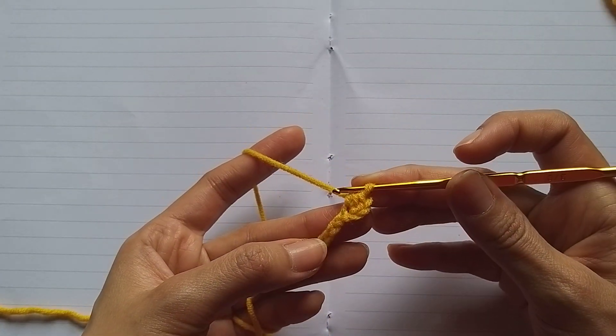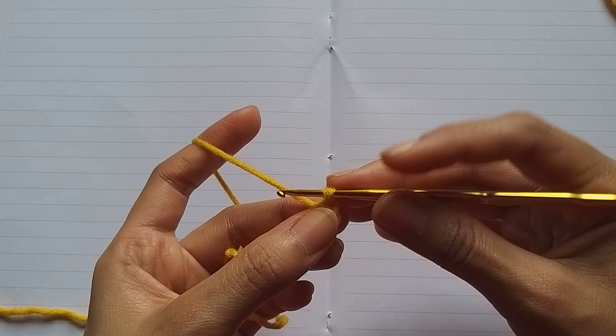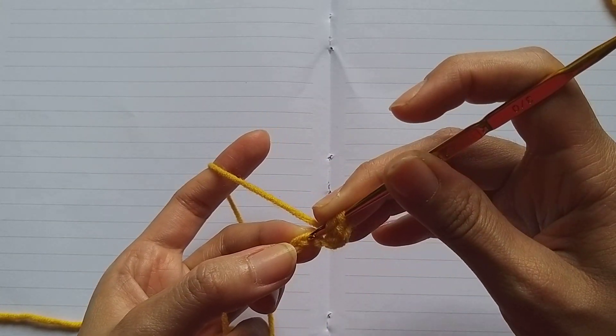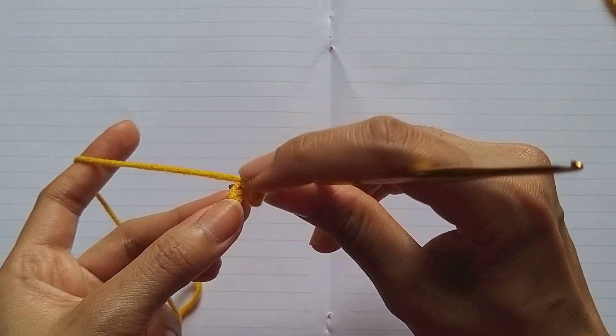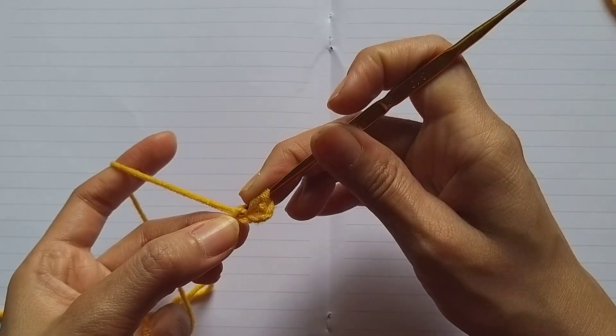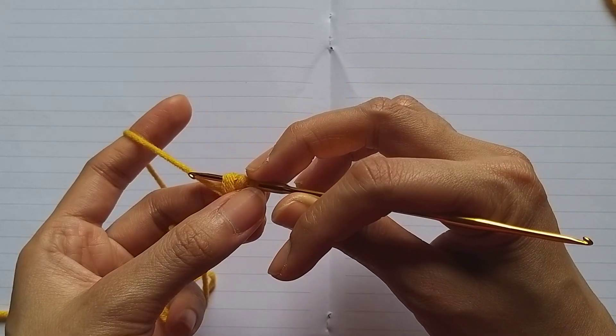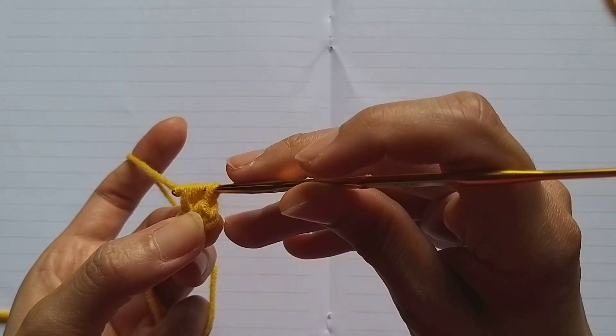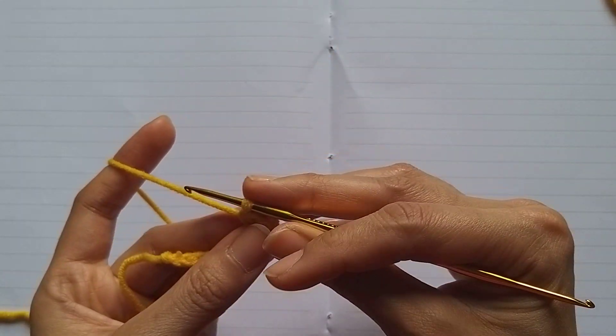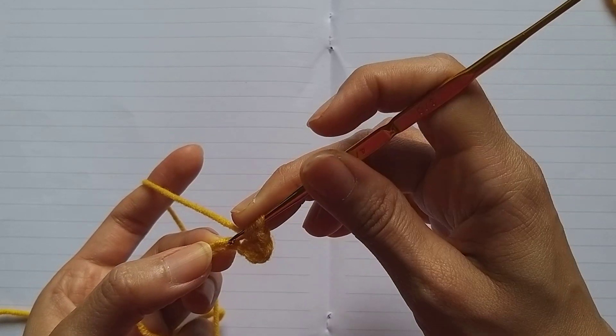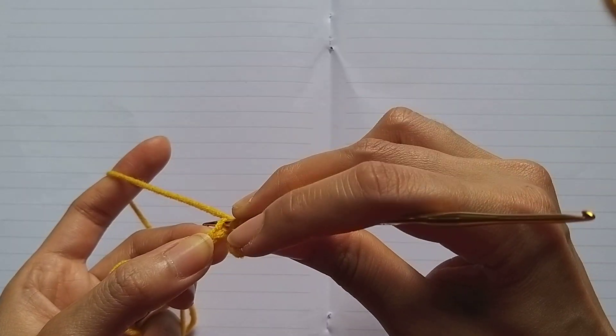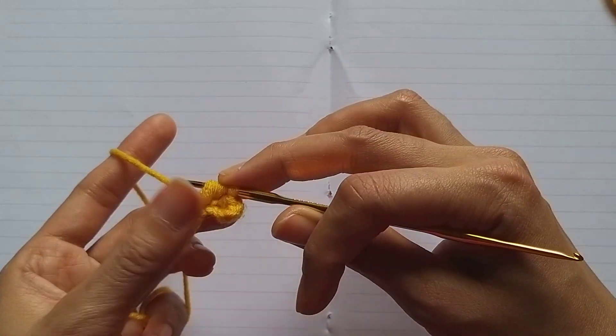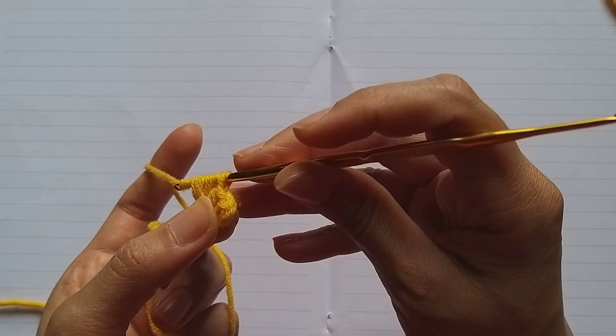Continue making the same stitches. Take the hook and insert it here. Pull through and continue this way. Make sure to maintain the same pattern throughout.